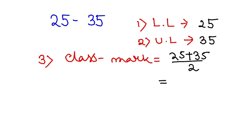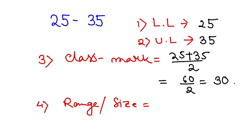And finally, my range or size. How to find this one? Upper limit minus lower limit. 35 minus 25, that will be obviously 10.